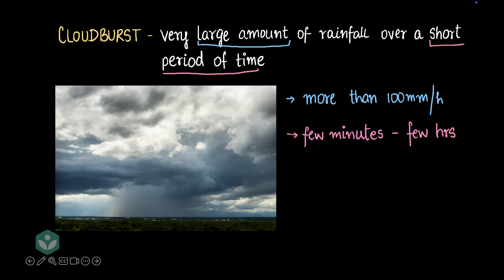There's another interesting thing about cloudburst: cloudbursts happen over a very small area. Usually only a few kilometers radius is affected. You can look at this picture and notice that the rainfall is happening only over a very small region, and it's very clearly demarcated. The cloud has disintegrated only in that small region; outside of that, there's no rainfall. That's how cloudbursts work.